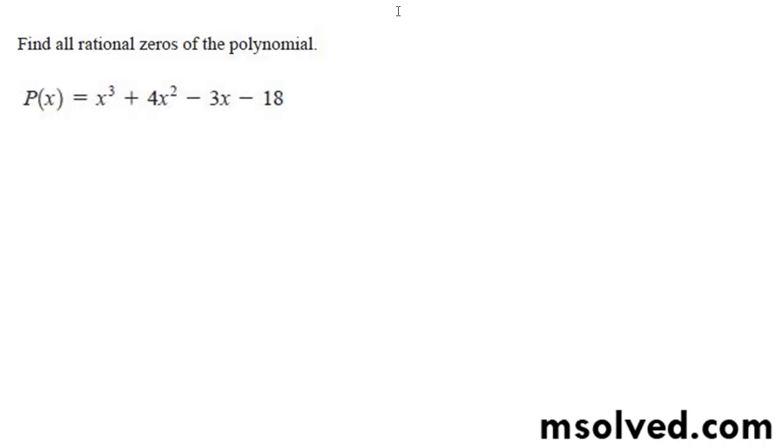So we're going to find all the rational zeros of this polynomial. To do that, find all the potential zeros based off the constant here.